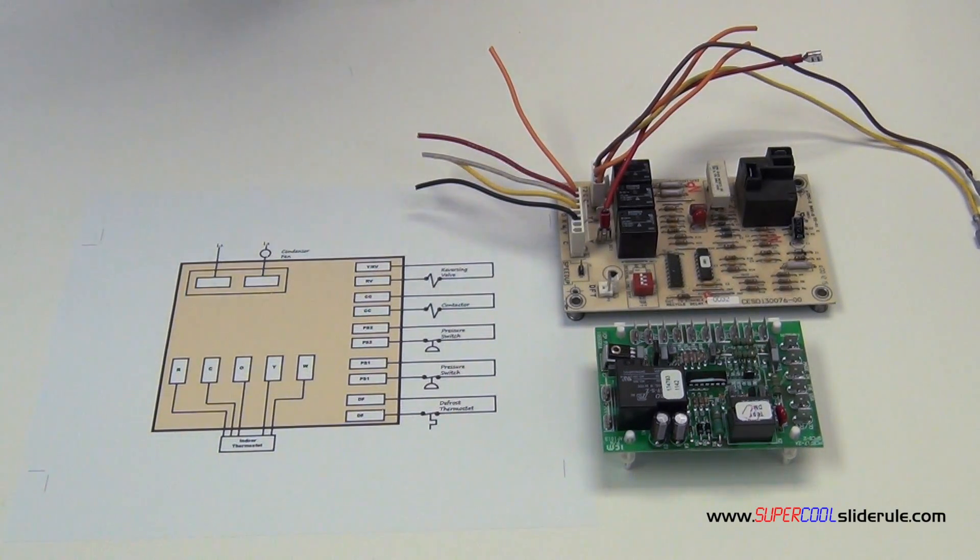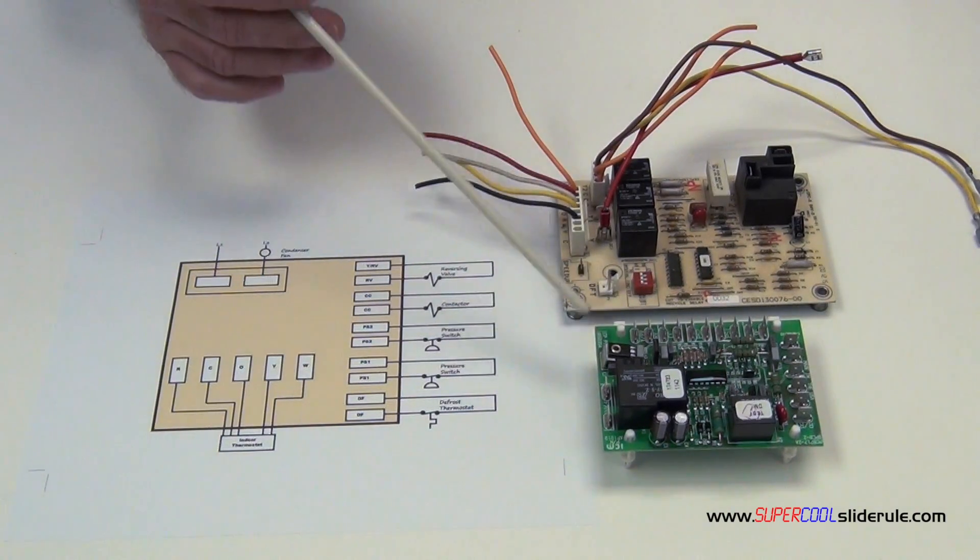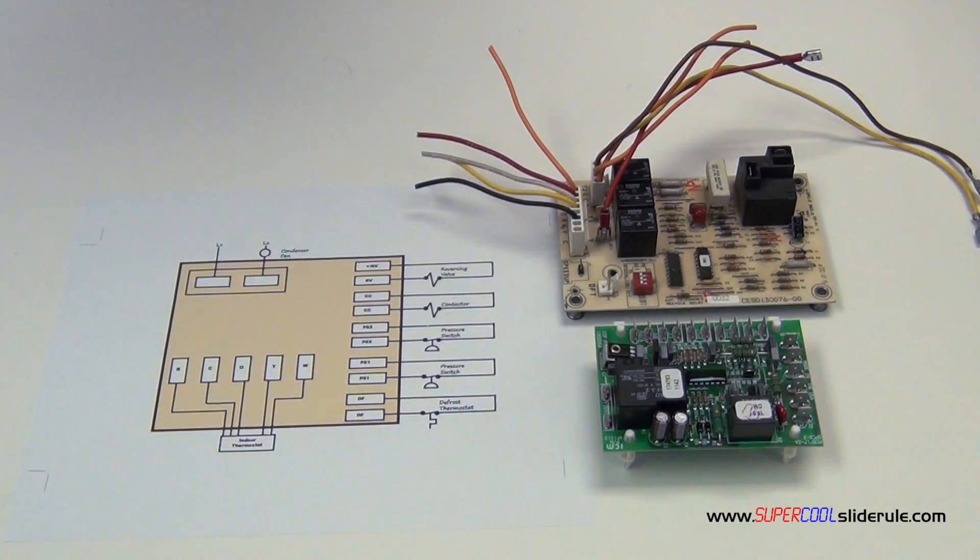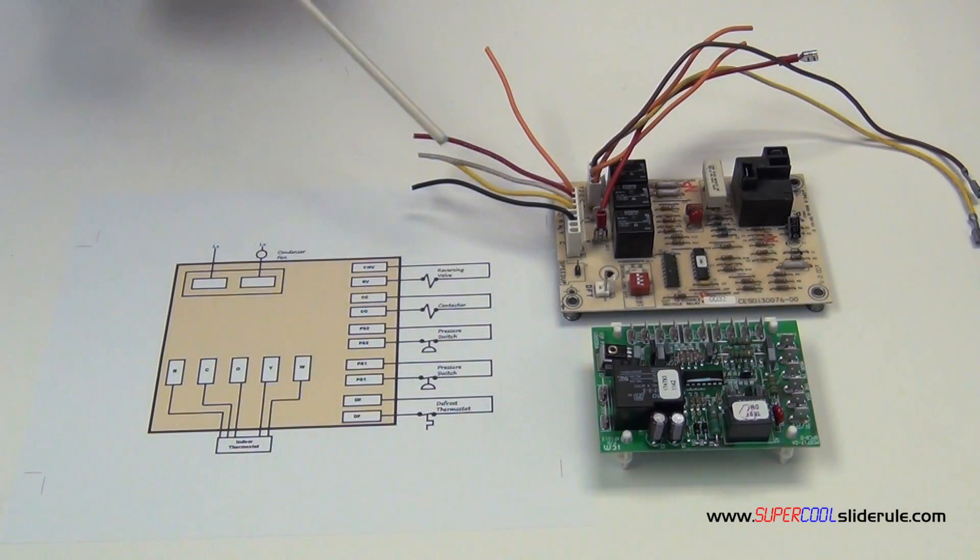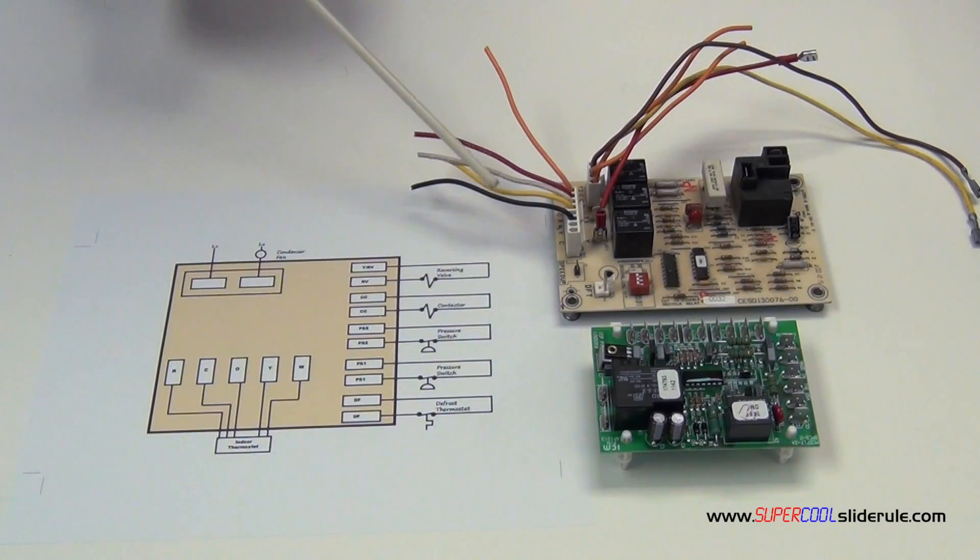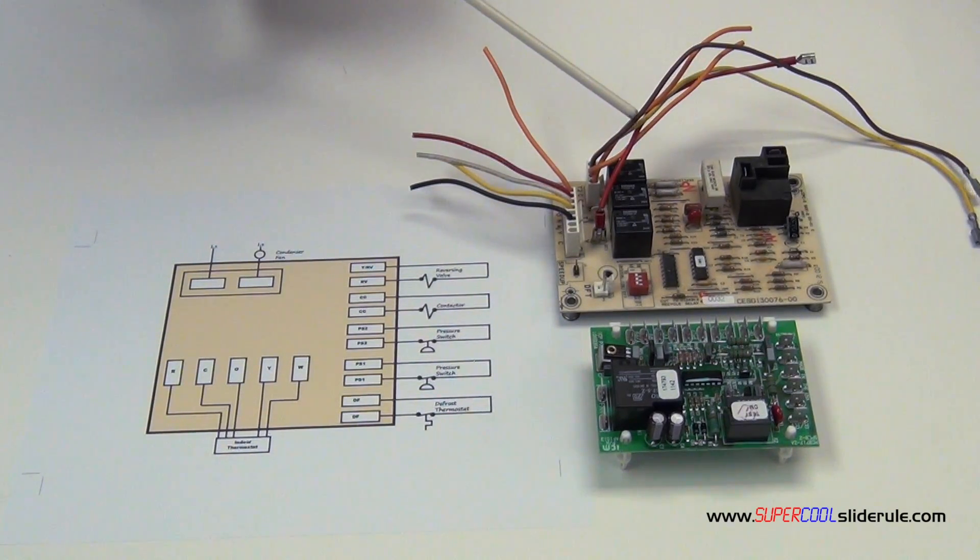A defrost heat pump board, this one's a Carrier, this one here is manufactured by ICM, functions pretty much exactly the same. What we have is our thermostat wires in, these are our incoming thermostat wires. These wires go out to control the different components of the heat pump.